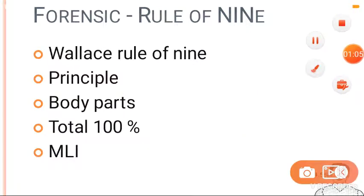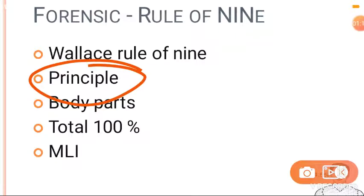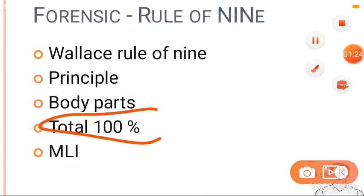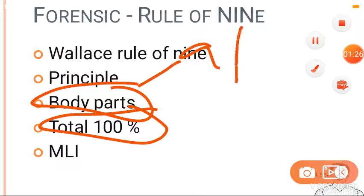Now the principle: according to Wallace's Rule of Nine, a body part accounts for a certain percentage of total body surface area. It allots nine percent to each area of the body. The total will be one hundred percent — each body part will have nine percent.